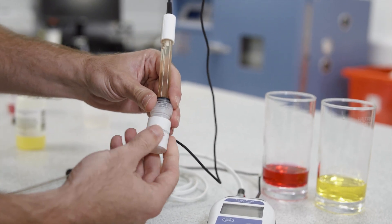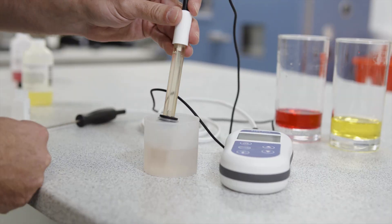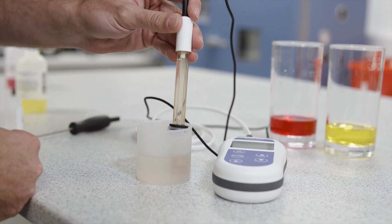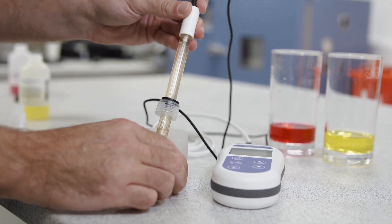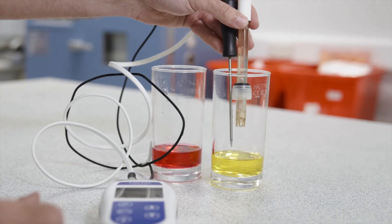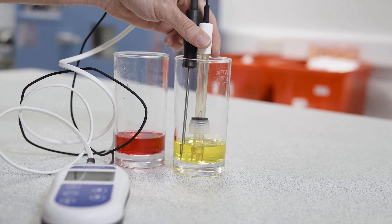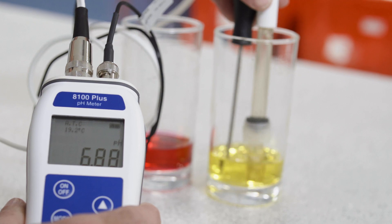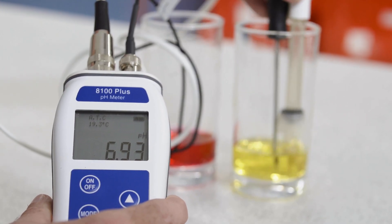If your electrode has been stored in a storage solution, rinse it with distilled or deionized water to remove any residue. Place both probes into the pH 7 buffer solution. Stir the probes in the solution to remove air bubbles and allow the reading to stabilize.